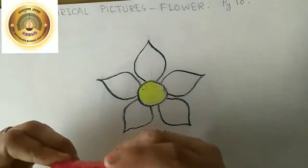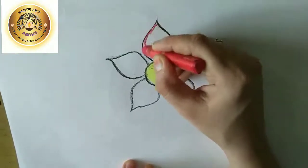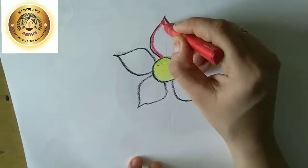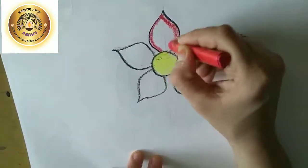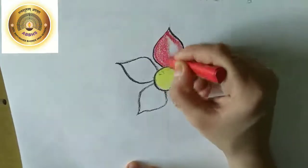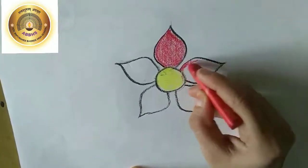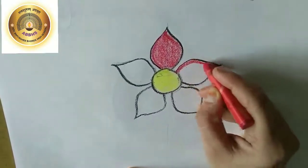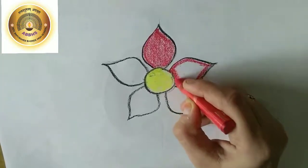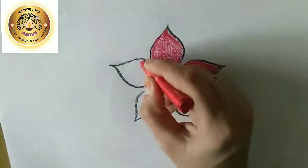Now, colour the petals with the red colour. First, colour the edges and then the inner part with left and right motion or upward and downward motion. Here I am doing upward and downward motion. Just watch carefully. While doing each of the petals, I am colouring the edges first and then the upward and downward motion.